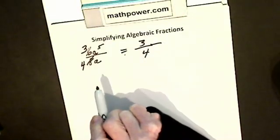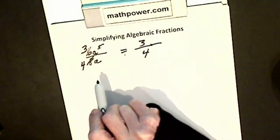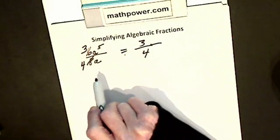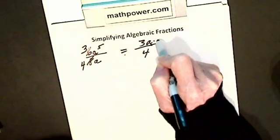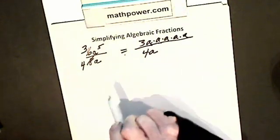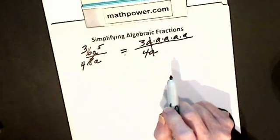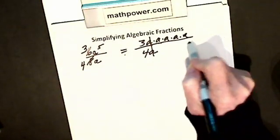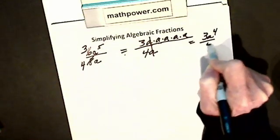It is division, we know to subtract exponents, but now we have a decision to make. I have to put the variable, or the a, wherever the higher exponent is. Because if you remember, a to the 5th means I have 5 a's in the numerator, I have 1 a in the denominator. Anything over itself cancels to the whole number 1. So I am left with 3a to the 4th over 4.